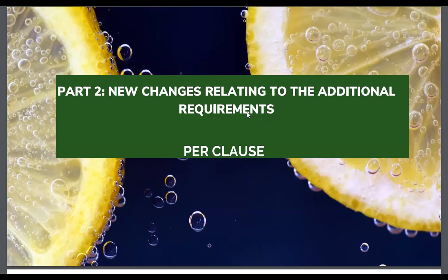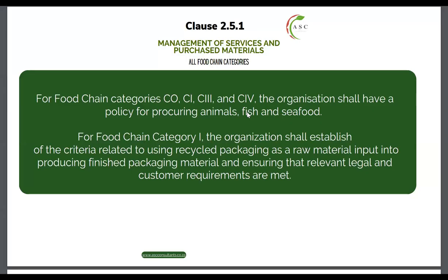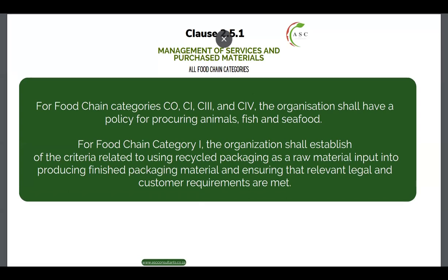Now let's move to part two — the additional requirements. Although the changes seem minimal in terms of page count, the implications for certified food organizations are quite significant. Some requirements are written as a single sentence but mean a great deal in terms of what the organization needs to do to comply. We'll only cover clauses where new changes have been introduced. The first is clause 2.5.1 — management of services and purchased materials.